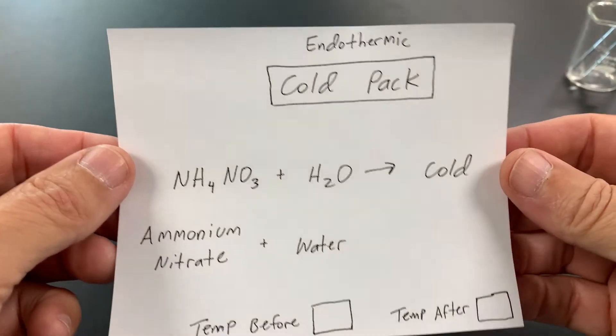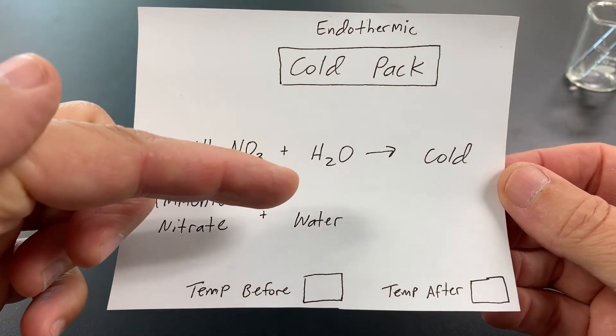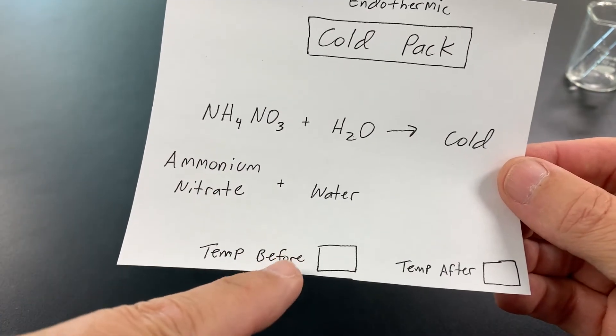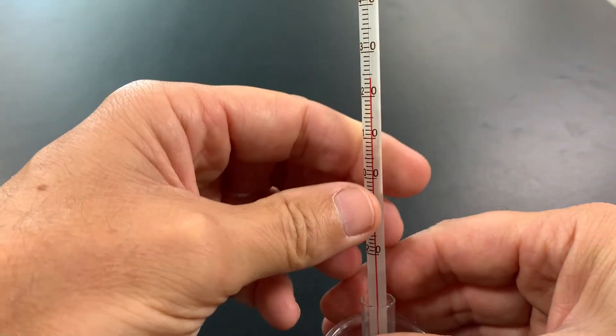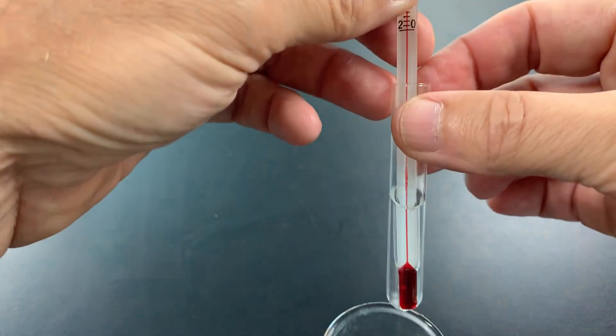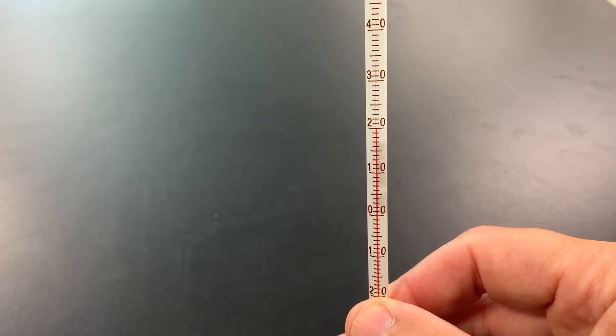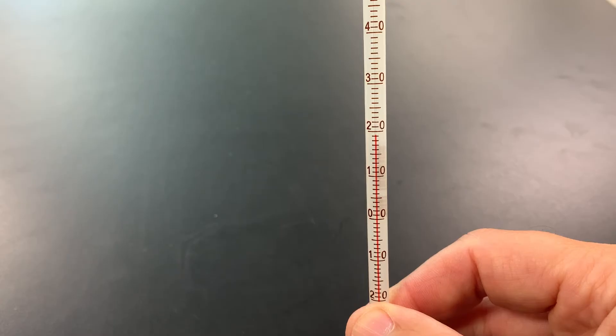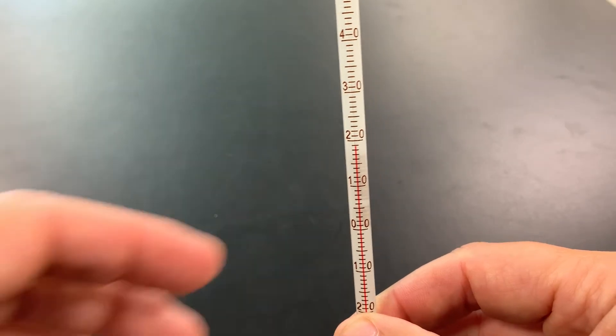Now let's do another reaction. This one is going to be cold pack. This one is endothermic. In this case, we're going to do ammonium nitrate with water, and it's going to get cold. Let's take our temperature before. So, I've got a new little beaker, and I'm going to put the thermometer in. You can see it's dropping rapidly. We're measuring the temperature of this new water. It looks like it's at 19 degrees Celsius. I'm going to write that down.